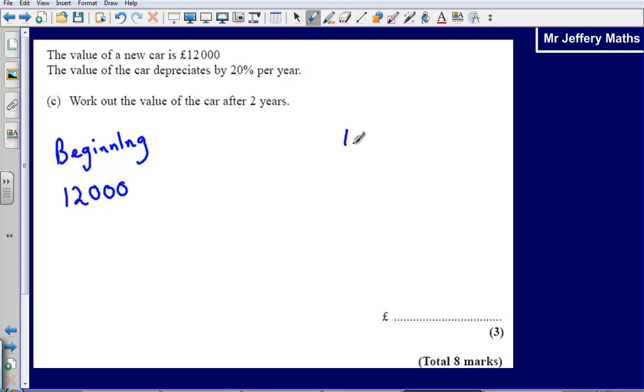The amount of money that it costs at the end then is what we need to figure out. So it depreciates by an amount each year. So we could say at the beginning of year 1, and I'm just going to put year 1 here, the amount was £12,000. So at the beginning of year 1 it was £12,000.